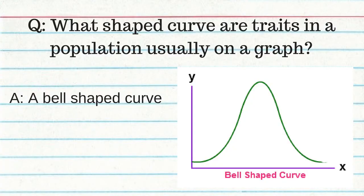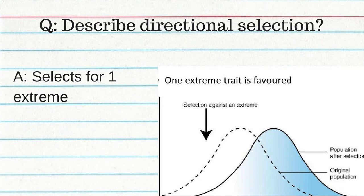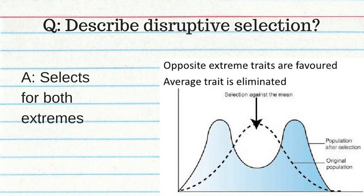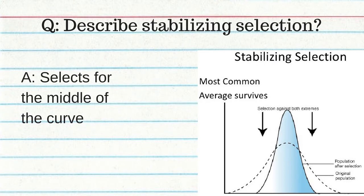The goal of evolution? Trick question — there is none. Evolution doesn't have a set direction or goal. Organisms do not evolve to become better; they become more suited to their environment. Traits in a population are usually distributed on a bell-shaped curve. Directional selection selects for one extreme. Disruptive selection selects for both extremes. Stabilizing selection selects for the middle of the curve.